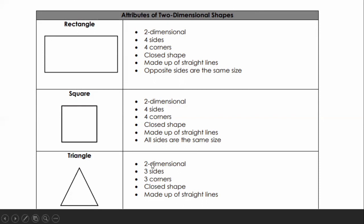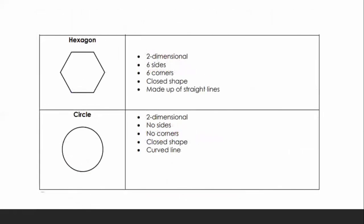A triangle has three sides, three corners, is a closed shape, and is made up of straight lines. A hexagon has six sides, six corners, is a closed shape, and is made up of straight lines. A circle is a two-dimensional object with no sides, no corners, is a closed shape, and has a curved line.